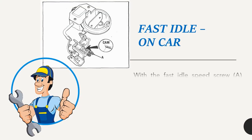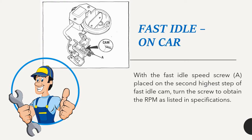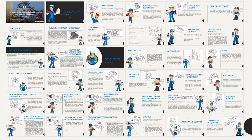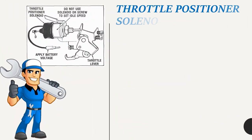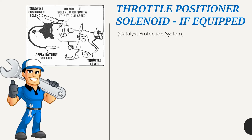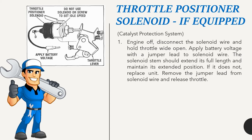Fast idle on car: With fast idle speed screw A placed on the second highest step of fast idle cam, turn the screw to obtain RPM as listed in specifications. Throttle position solenoid (if equipped) — catalyst protection system: Engine off, disconnect the solenoid wire and hold throttle wide open. Apply battery voltage with a jumper lead to solenoid wire. The solenoid stem should extend its full length and maintain its extended position. If it does not, replace unit.